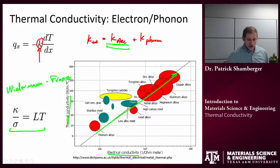And basically it says that thermal conductivity and electrical conductivity are roughly proportional to each other. And that proportionality is L, which is the Lorentz factor, times the temperature of the system.